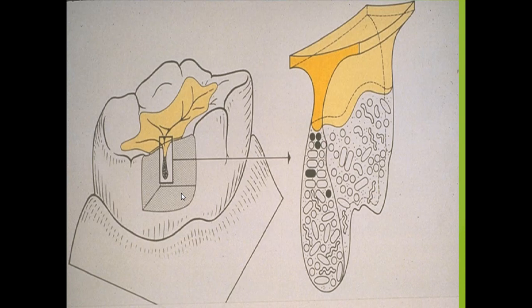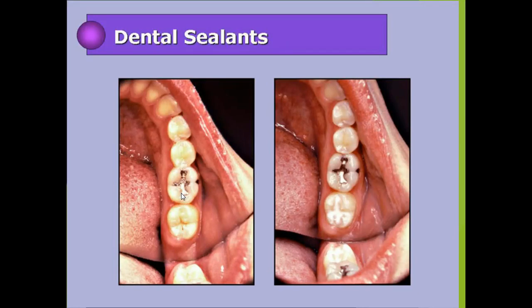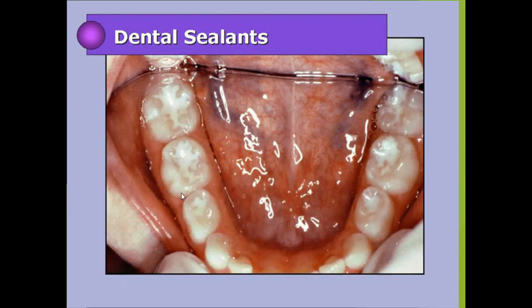This is a classic picture of how sealants work. In this picture you can see a permanent first molar filled with amalgam restoration, and the second molar has a stain on the occlusal surface, which is filled with pit and fissure sealant. In another picture, pit and fissure sealants are placed on primary first and second molars and on the permanent first molar.